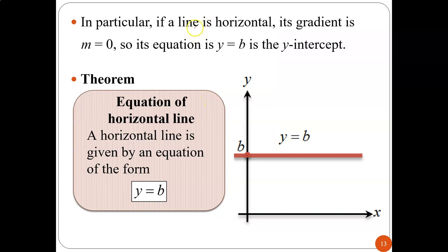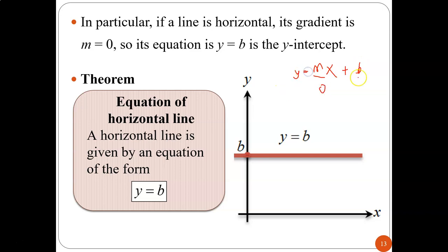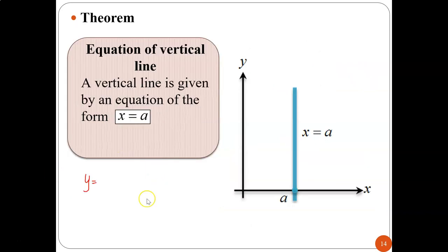In particular, if a line is horizontal (mendatar), its gradient equals 0, so the equation becomes simply Y equals B. If a line is vertical (garis menegak), the equation is X equals A, where A is any value on the X-axis. The general form of a straight line is AX plus BY plus C equals 0, where A, B, and C are real numbers and A and B cannot both be 0.